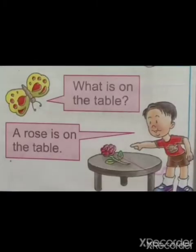What is on the table? Read the answer: A rose is on the table. A butterfly is asking a question: What is on the table? Now the boy is showing a rose on the table, so he is giving an answer: A rose is on the table.